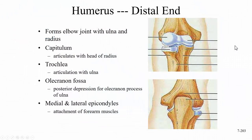The distal end of the humerus forms the elbow joint with the ulna and the radius. Technically these articular surfaces are condyles, and above them are the epicondyles. This is the lateral epicondyle and this is the medial epicondyle.